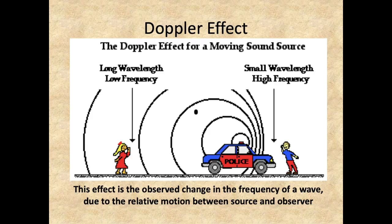Doppler effect is the observed change in the frequency of a wave due to the relative motion between source and observer. It could either be due to the speed of the source that is moving, or it could be due to the observer moving relative to the source.